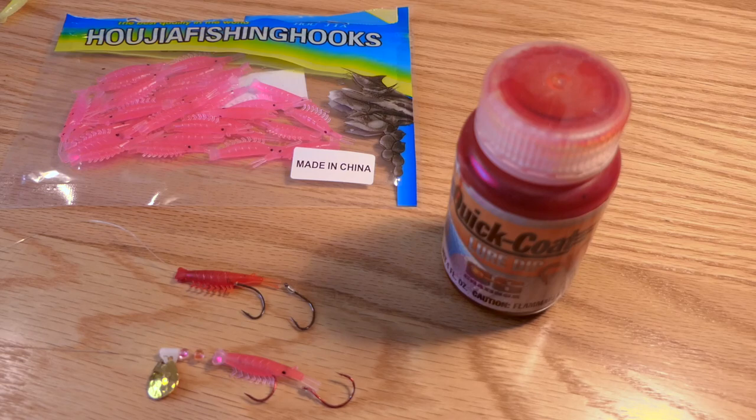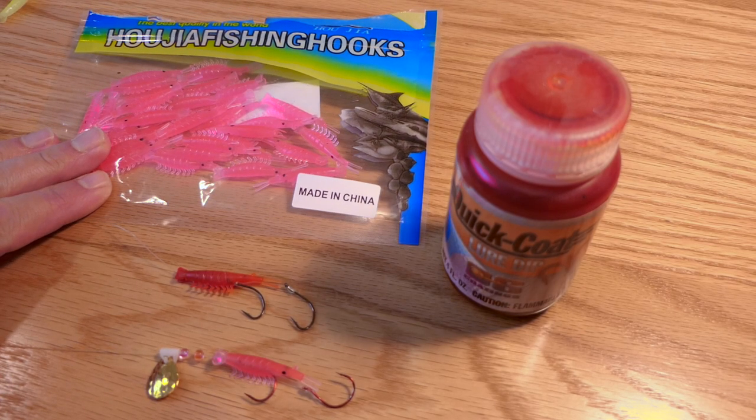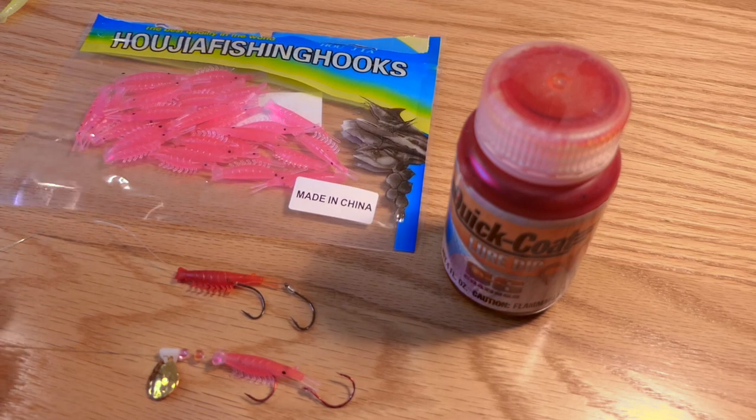Okay, so in a previous video, I demonstrated to you how to make some really cool kokanee lures using these pre-dyed micro shrimps that you can get on Amazon for really cheap.